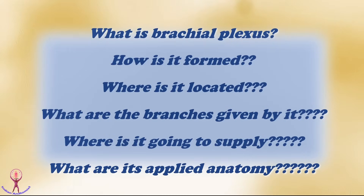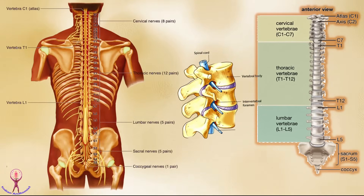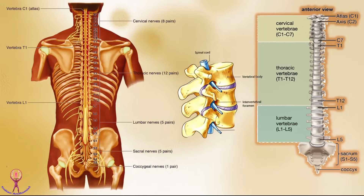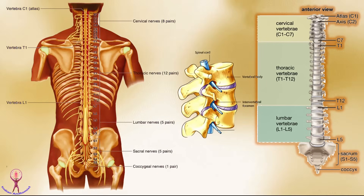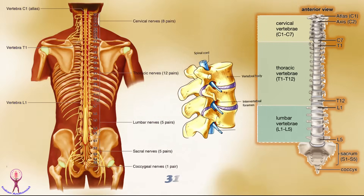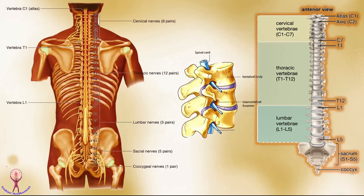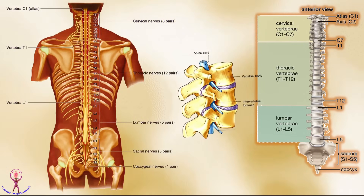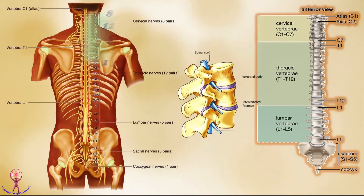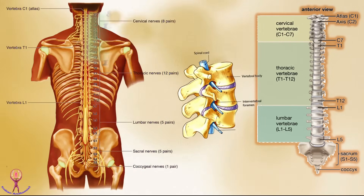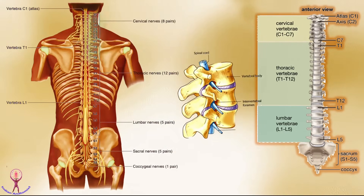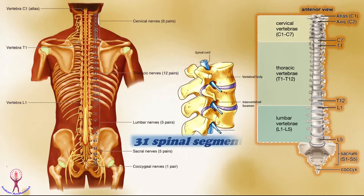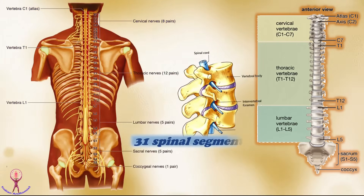Before knowing the brachial plexus, one should know about spinal nerves. Spinal nerves arise from the spinal cord and are responsible for conveying information in the form of nerve impulses between the spinal cord and the rest of the body. There are 31 pairs of spinal nerves in humans, divided into 5 types based on their position in the vertebral column: 8 pairs of cervical, 12 thoracic, 5 lumbar, 5 sacral, and 1 pair of coccygeal spinal nerves. Each pair arises from one segment of the spinal cord, so the spinal cord has 31 spinal segments.